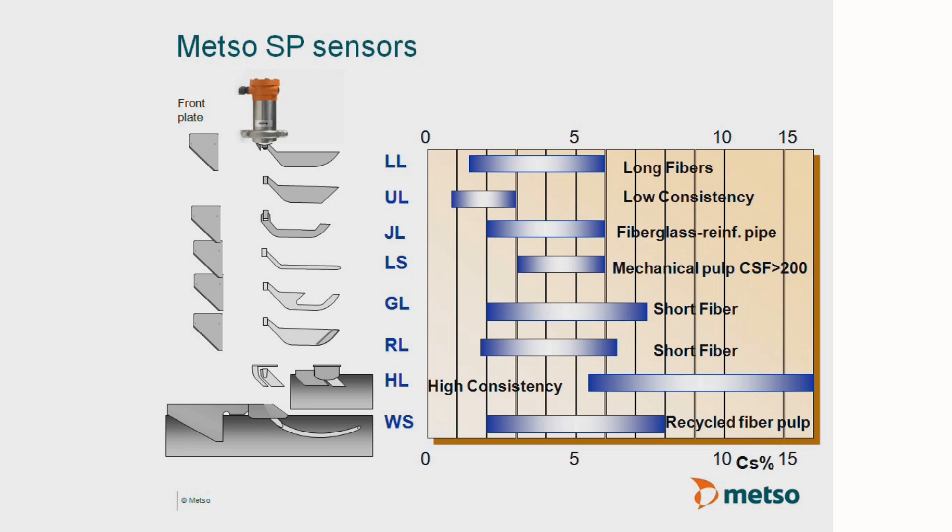The SmartPulp blade is selected for a particular application in which the selecting factors are based on consistency and pulp type. For example, if you have a hydropulper application with unscreened recycled fiber, you would use the WS blade shown here on the bottom. It's long, thin, and cylindrical, which reduces debris hangup.